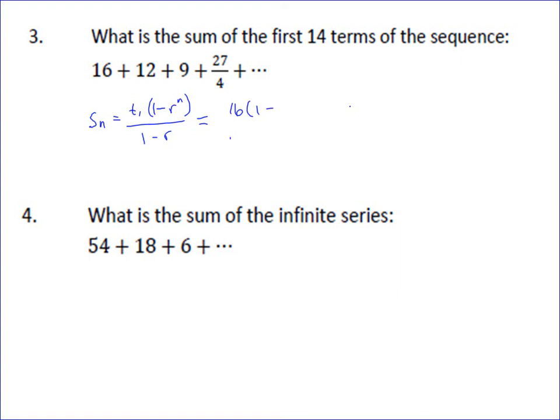And you find out it's 3 fourths. You could do 9 over 12 and also find that it's 3 fourths. And so this is going to be 3 fourths to the n, and then all over 1 minus 3 fourths.